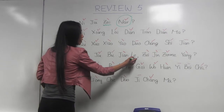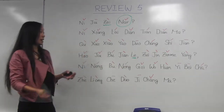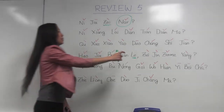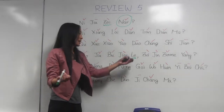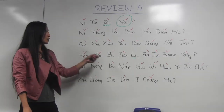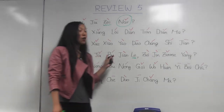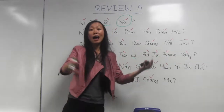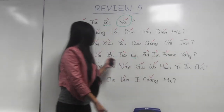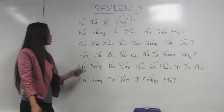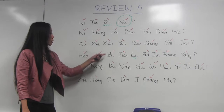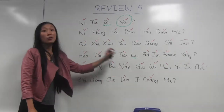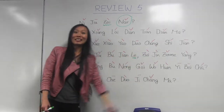好久不见了. 好久 means 'very long time,' 不见 means 'not see.' So: long time no see. Because it's already past, we add 了 at the end. 好久不见了. Then: 最近怎么样? 怎么样 means 'how was it,' and 最近 means 'lately' or 'recently.' So together: long time no see — how have you been recently?